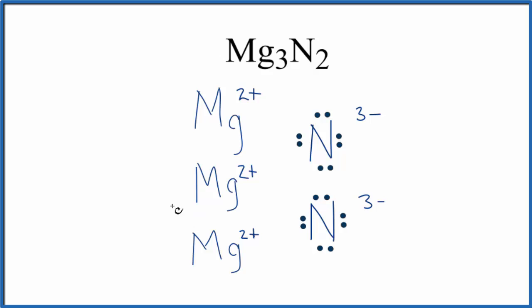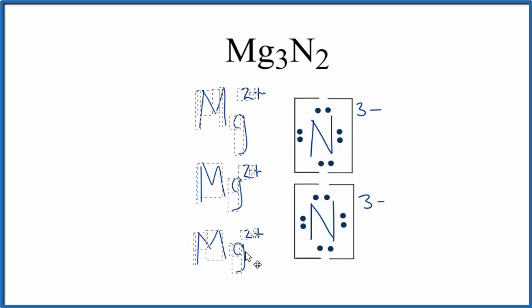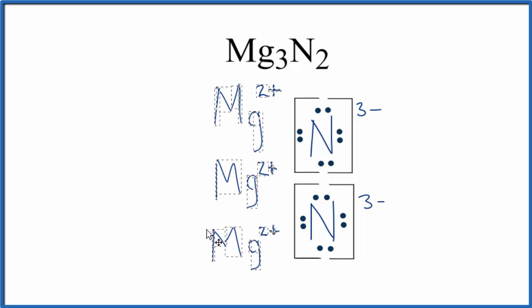Since the electrons were transferred from the magnesium atoms to the nitrogen atoms, let's put brackets around each nitrogen to show that they're transferred, that they're not shared. Now we have these positive ions and the negative ions, they're attracted, and that forms our ionic bond.